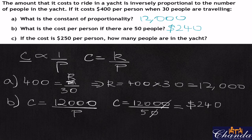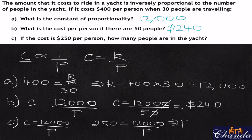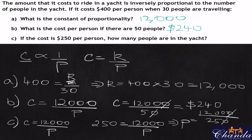Flipping it around: if the cost is $250 per person, how many people are on the yacht? We have C equals 12,000 over P, so 250 equals 12,000 over P. Therefore P equals 12,000 over 250. Zeroes get cancelled and we get a value of 48. So if the cost is $250 per person, there are 48 people on the yacht.